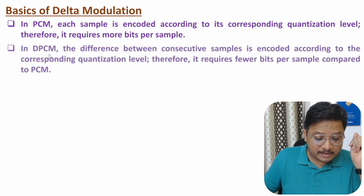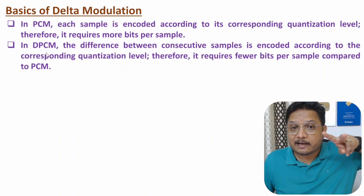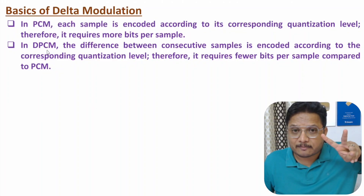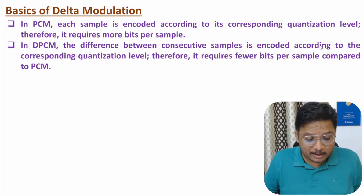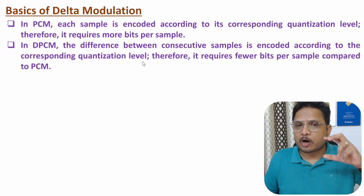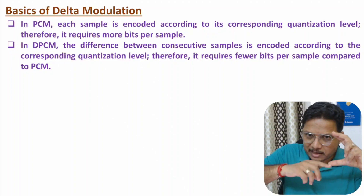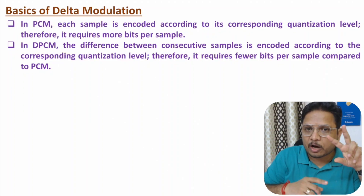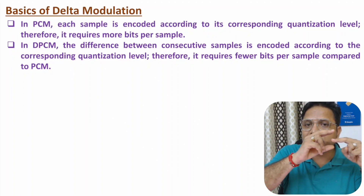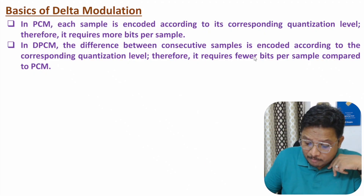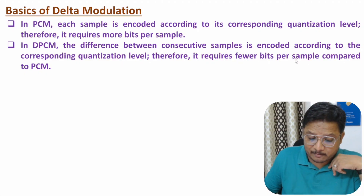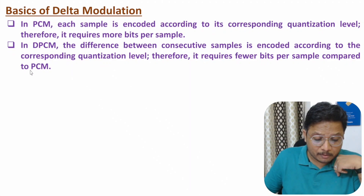In differential PCM, we take the difference between two consecutive samples. So in DPCM, the difference between two consecutive samples is encoded according to the corresponding quantization level. If you talk about one sample, there will be a larger range of voltage. But if you talk about the difference between two samples, that range of voltage decreases. With a lower range of voltage, the number of bits per sample will decrease. So with differential PCM, we need fewer bits per sample compared to PCM.